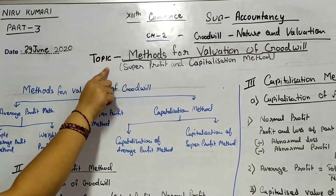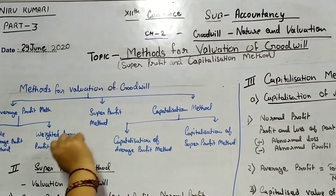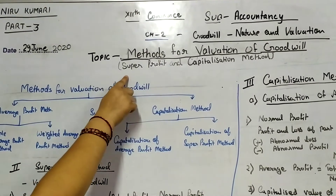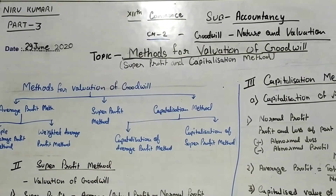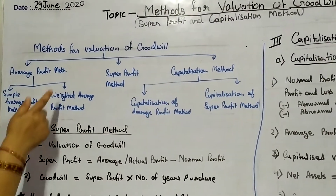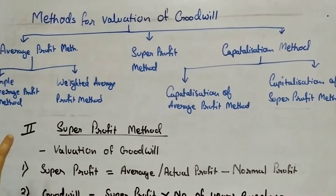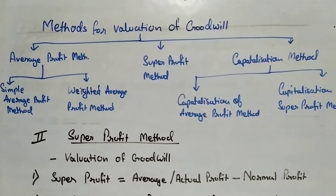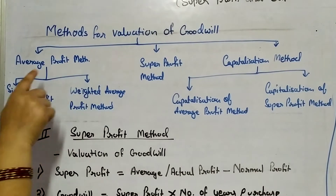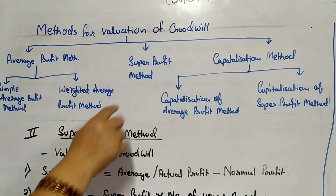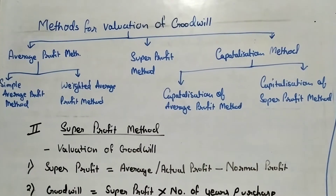The topic that we cover today is Method for Valuation of Goodwill, under which we study about the Super Profit and Capitalization Method. In the previous class, we already discussed about the average profit, the Super Profit Method, and the Capitalization Method.